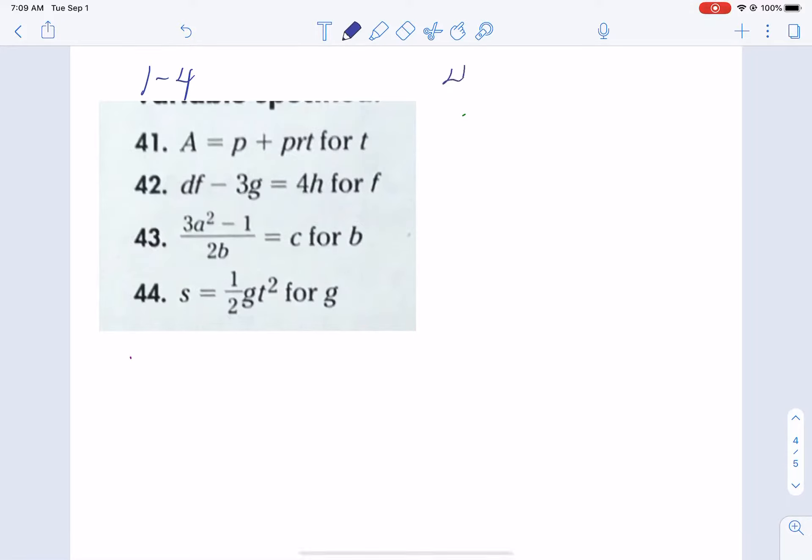Let's take a look at problem 41. Our formula is A equals P plus PRT, and we want to solve it for T. Now, if all the other things were numbers, I think you could easily solve that for T. But because there are other variables, you get wrapped up in the fact that there are other variables. Treat them if they were numbers.